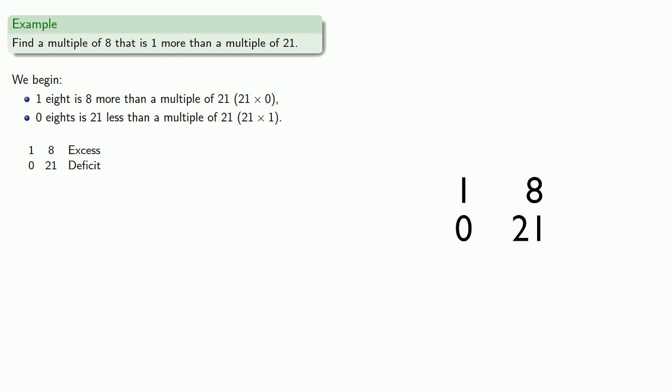So we'll subtract once, twice, three times. Oh wait, we can't do that. Now we'll multiply our corner numbers 1 times 2 and add our other corner number 0. And this result will replace the corner number 0. And this tells us that 2 eights is 5 less than a multiple of 21.